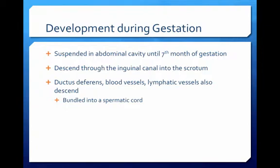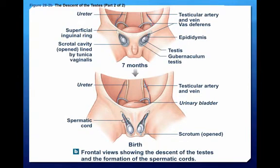During development, the testes of the fetus are suspended in the abdominal cavity by connective tissue. During the seventh month of gestation, the fetus grows very rapidly, and the testes are pulled through the abdominal musculature to descend into the scrotum. The accessory structures accompany the testes during this descent. A spermatic cord is formed with the ductus deferens, blood vessels, nerves, and lymphatic vessels, all bundled in connective tissue and extending from the abdominal cavity to the testes in the scrotum through the inguinal canal. On this diagram, note the location of the testes and the ductus deferens at seven months and then again at birth.